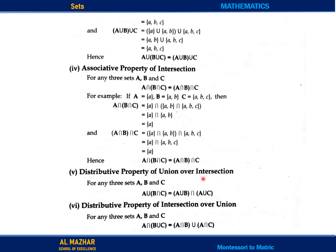Now the distributive property of union over intersection. How does distribution work? One set is outside the bracket and two sets are inside the bracket. The outside set distributes — multiplies with both — forming two separate brackets: A union (B intersect C) equals (A union B) intersect (A union C), because A distributes over both. Then the distributive property of intersection over union: A intersect (B union C) equals (A intersect B) union (A intersect C). Where union was outside, here intersection is outside distributing over the union inside.